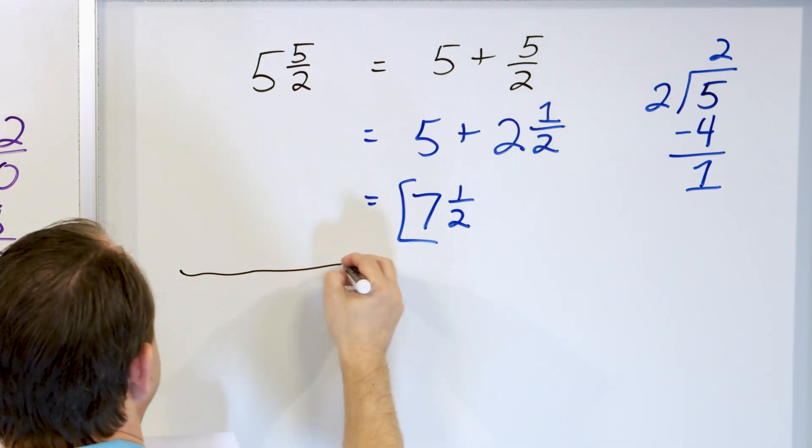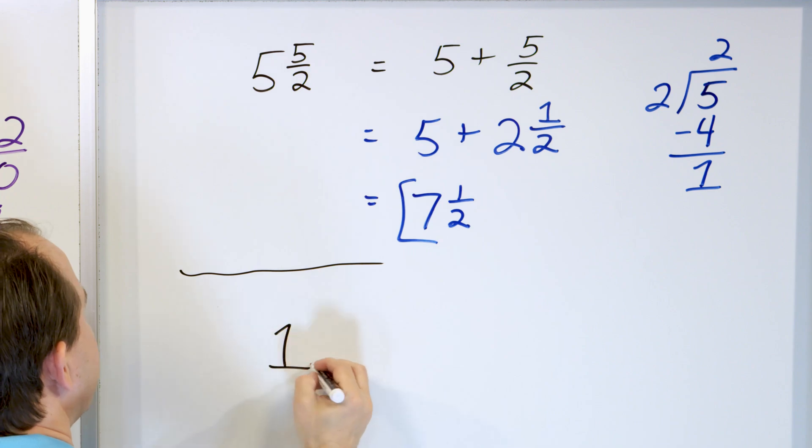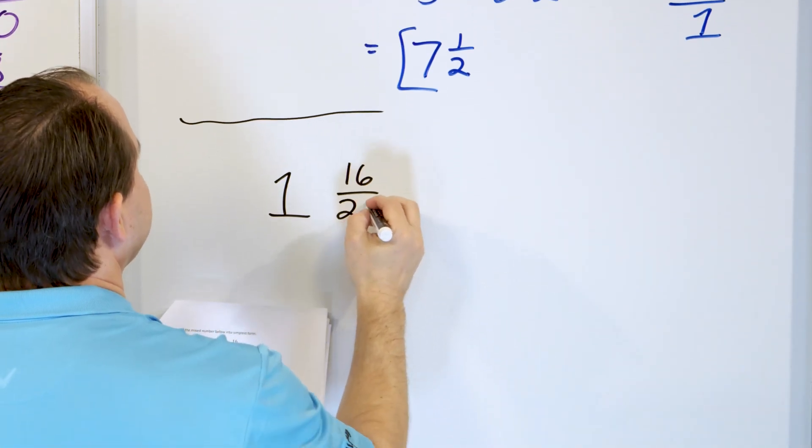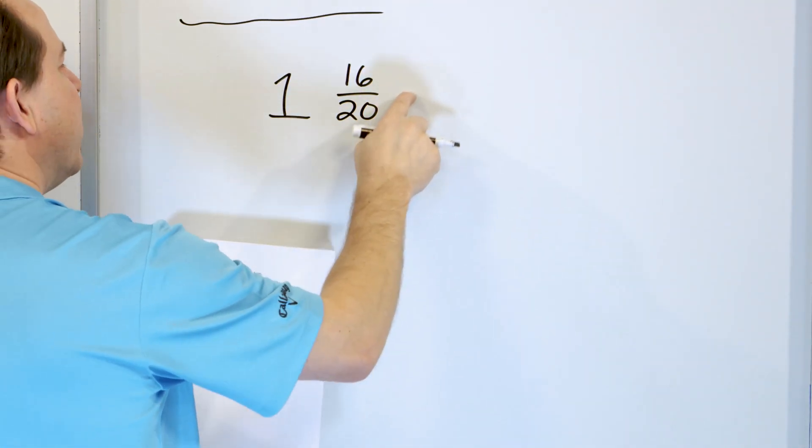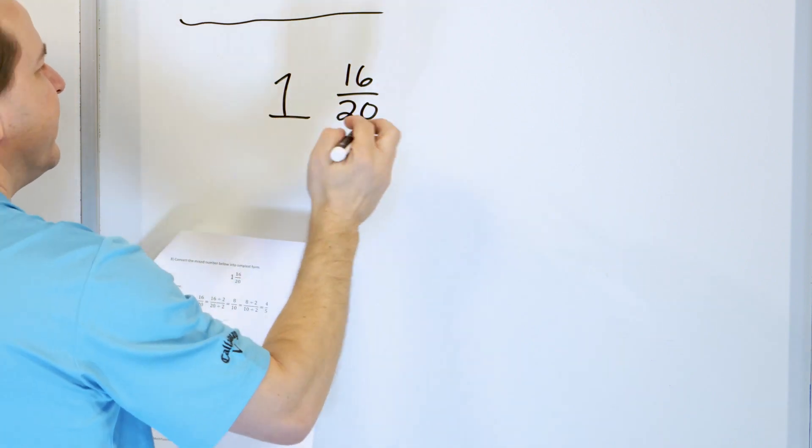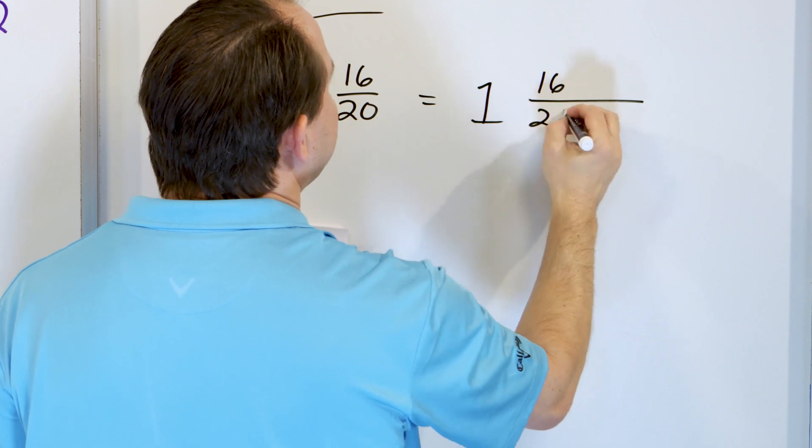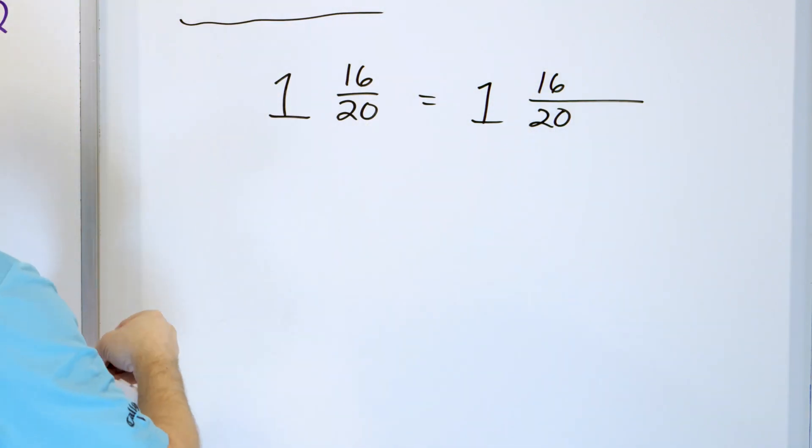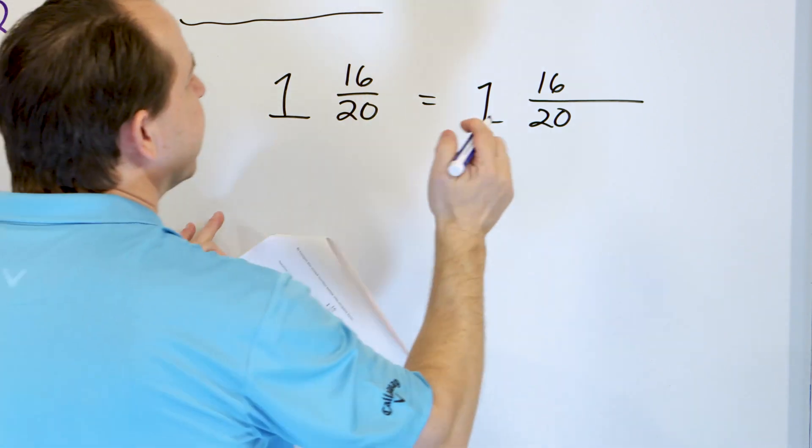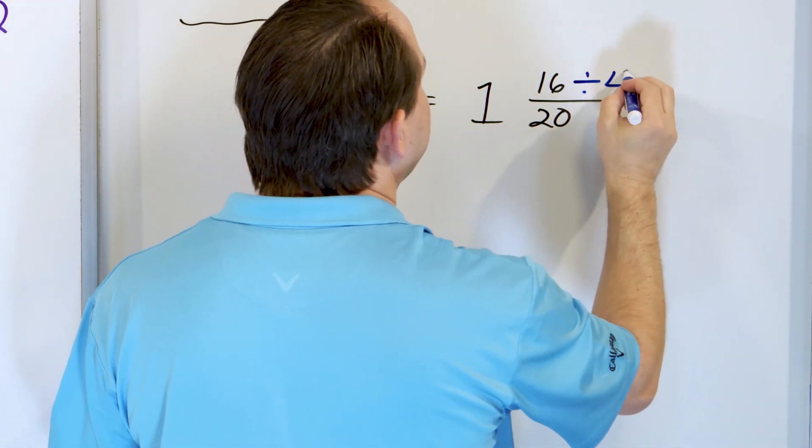What about 1 and 16/20ths? Now this is not improper, this is a proper fraction, but I can divide top and bottom by something. So 16/20ths. You could divide by 2 because they're even numbers, but if we think a little harder, we can also divide it by something larger. We can divide by 4.